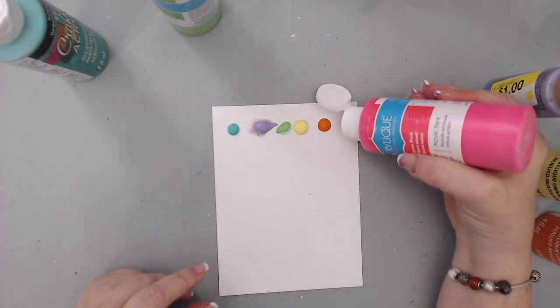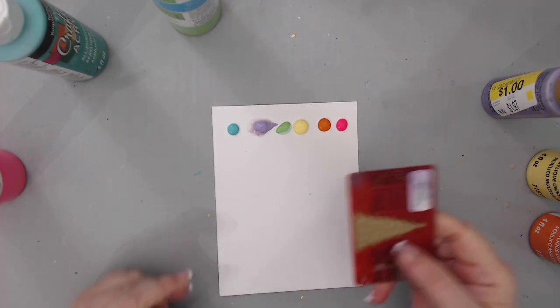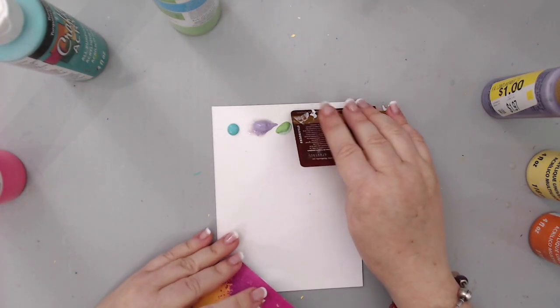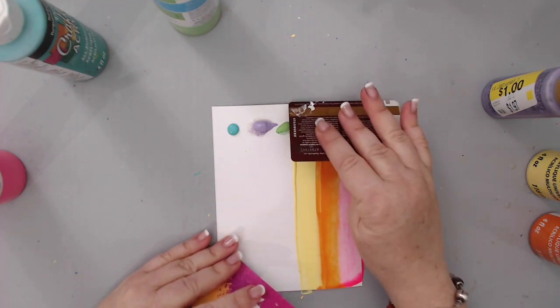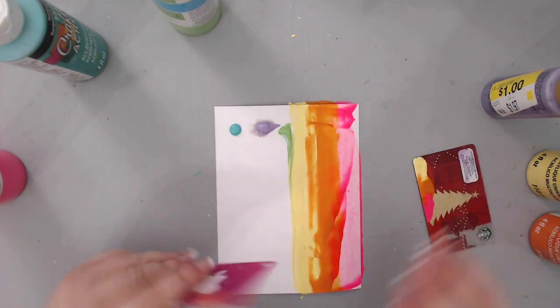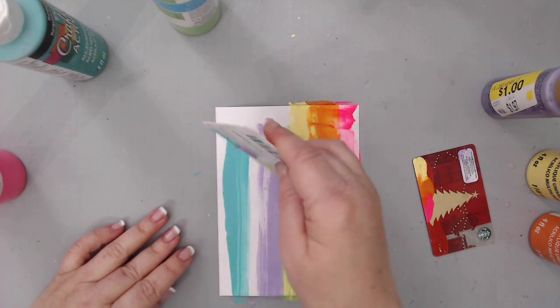All I did is I put a few drops of each of the paints, and these are dollar store paints. I added them in a row at the top of my paper. This is Bristol smooth paper from Strathmore. All I'm doing is using old credit cards—this is a Starbucks card and an iTunes card.